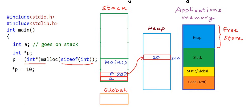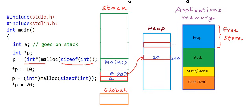After writing 10 in this particular block, I will make one more call to malloc. When I make one more call to malloc, one more block of four bytes is allocated on the heap. Let's say the address is 400 for this block. Now the address returned by the second call to malloc is stored in the variable p. So p is now pointing to address 400. The next line writes 20 at this address.